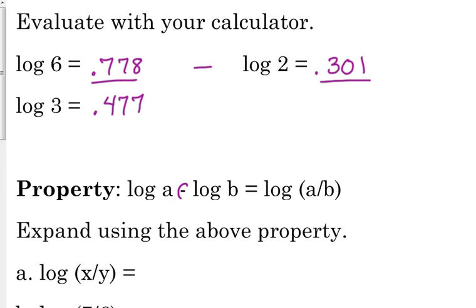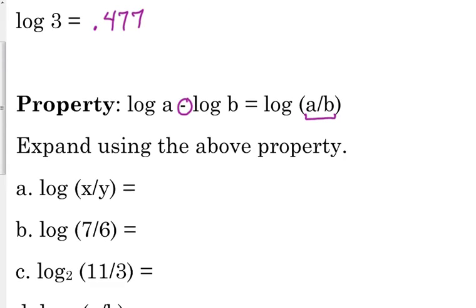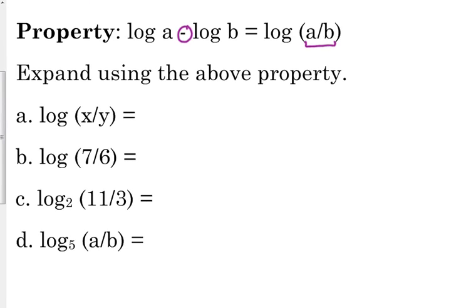If we are subtracting two logarithms, then that can be expressed as the log of the quotient. When you're subtracting, it's the log of the quotient, and you do it in order. If a comes first, then a is the number on the top. So let's start with expanding a few of these. Log of x over y would be equal to the log of x minus the log of y.